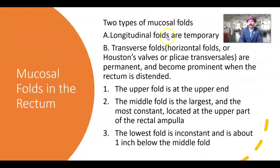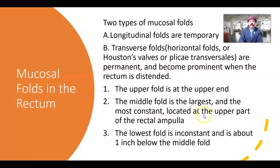Two types of folds are present inside the rectum. Longitudinal folds are temporary — they flatten when there is feces collection and defecation. Transverse folds — also called horizontal folds, Houston's valves, or plicae transversales — are permanent and become prominent when the rectum is distended. The upper fold is at the upper end; the middle fold is the largest and most constant, located along the curvature in the upper part of the rectal ampulla; the lowest fold is inconstant, about one inch below the middle fold.